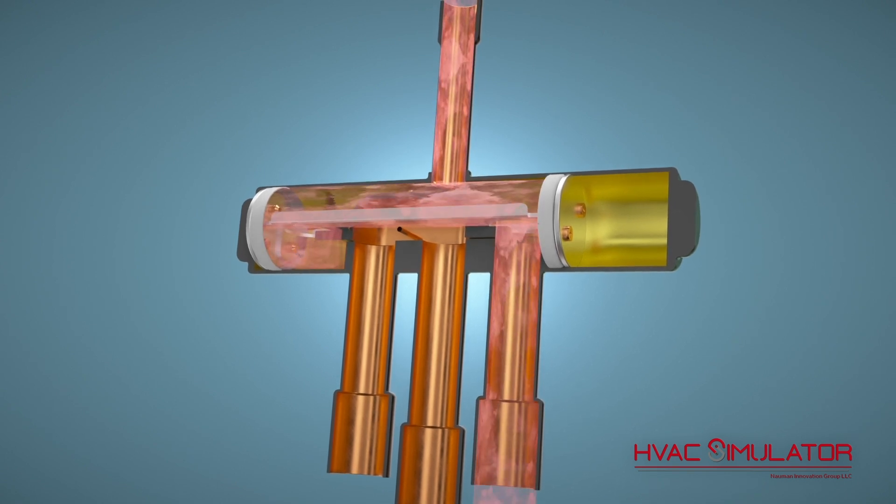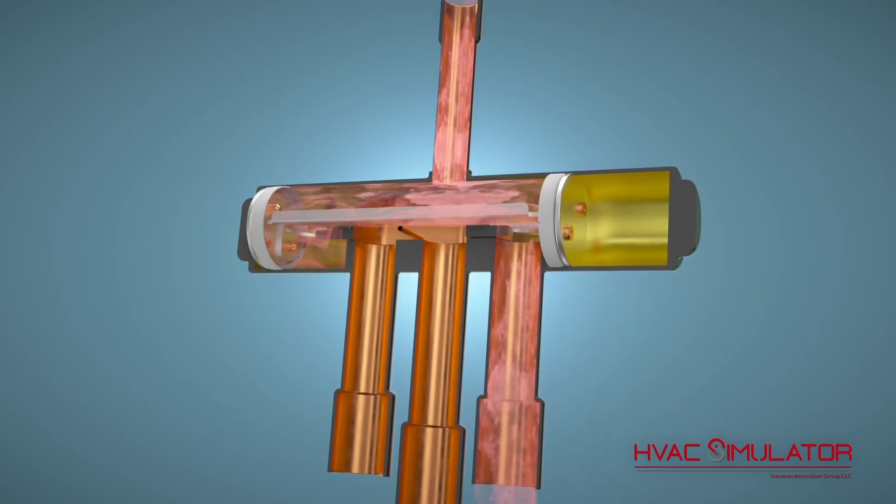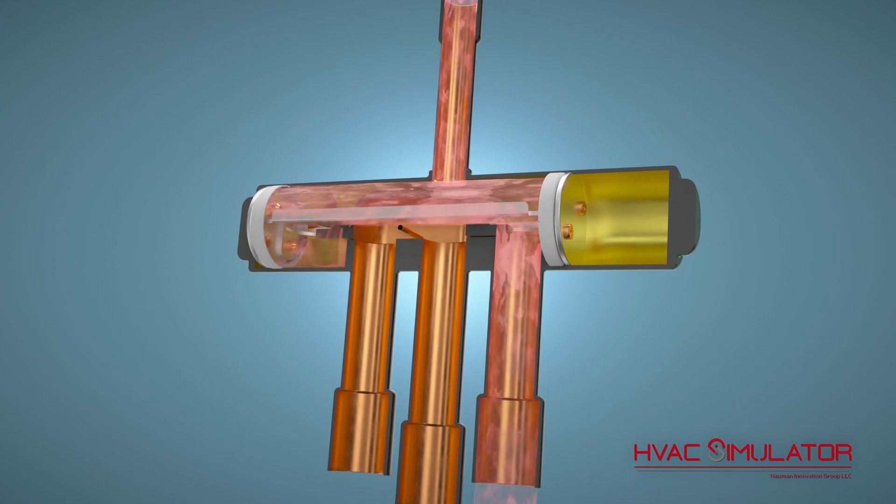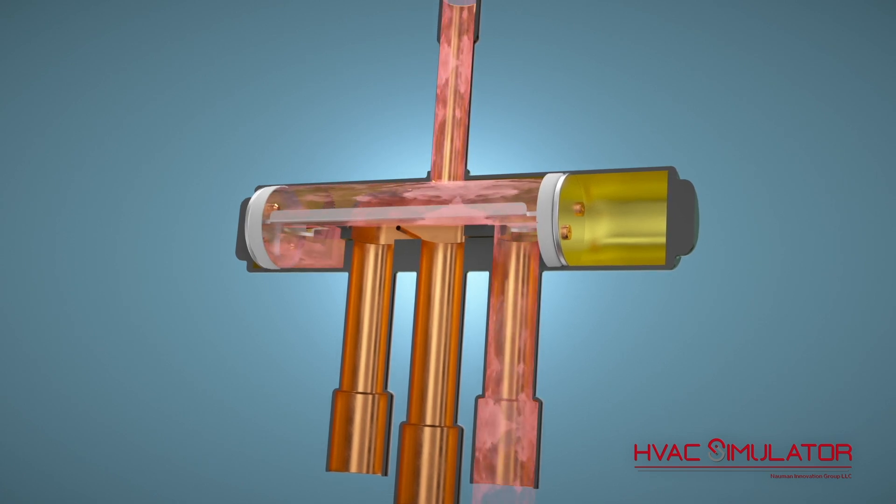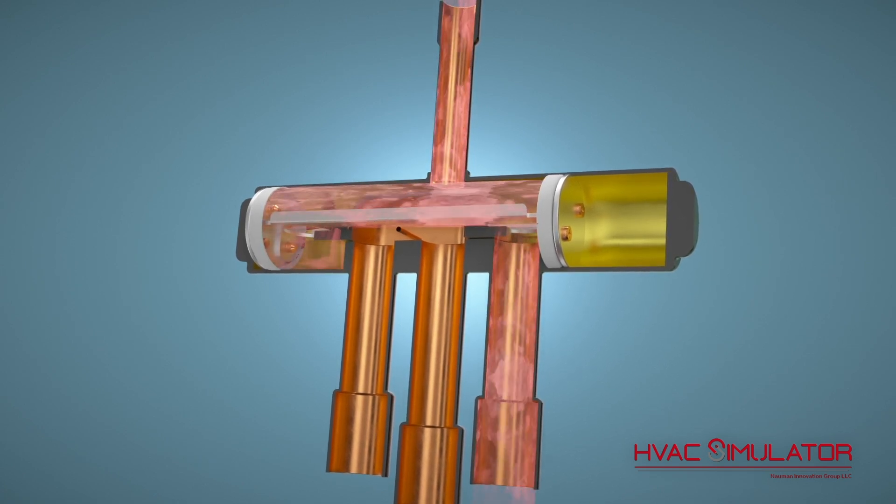High temperature superheated vapor from the compressor enters the discharge inlet port, travels into the valve body, and discharges through a side port to the indoor coil.